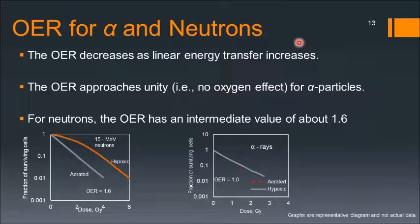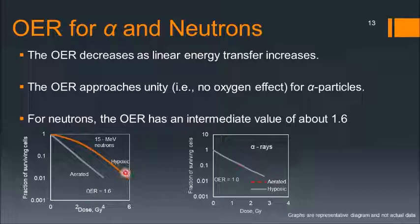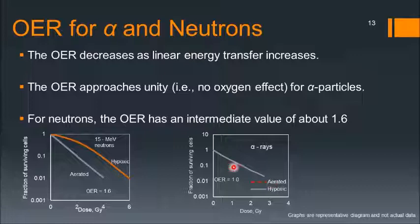The OER for alpha particles and neutrons is different from that of x-rays. The OER decreases as linear energy transfer increases. OER approaches a value of unity for alpha particles, meaning there is no oxygen effect. For neutrons, the OER has an intermediate value of about 1.6. For alpha particles, the cell survival curves under aerated and hypoxic conditions overlap, meaning the oxygen enhancement ratio is 1.